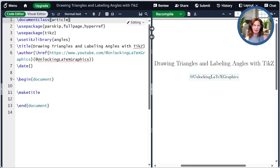Here is the preamble for the document that we'll create. The first group of packages are just conveniences. Parskip and FullPage make things look nice, while HyperRef enables me to link the author name back to the channel. The essential package is TikZ. Today we'll be using the Angle TikZ library, which is key for drawing and labeling angles.